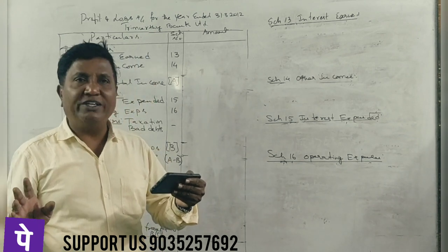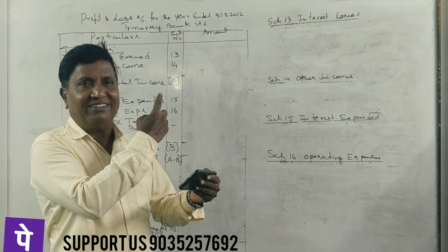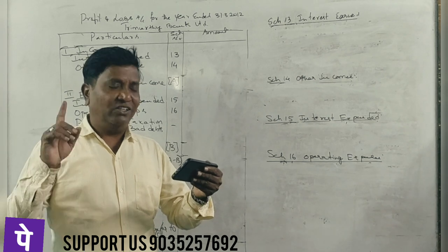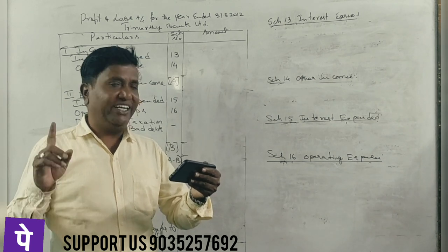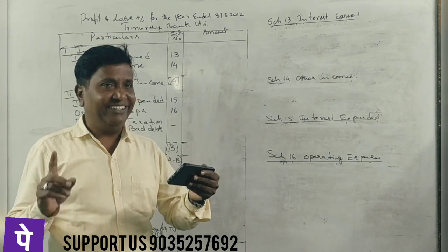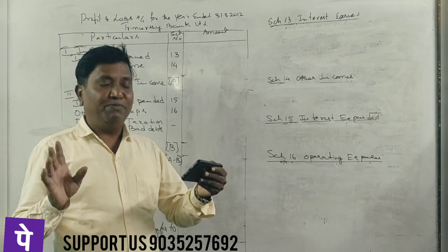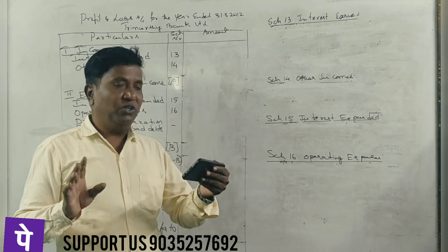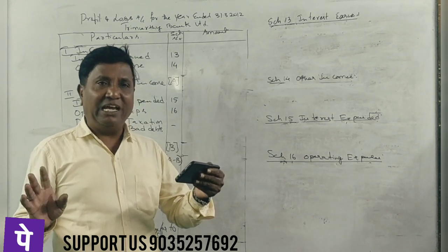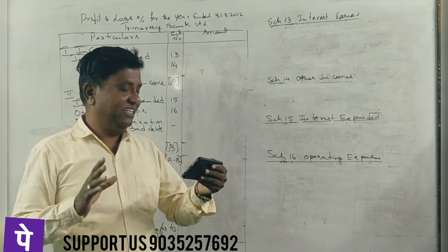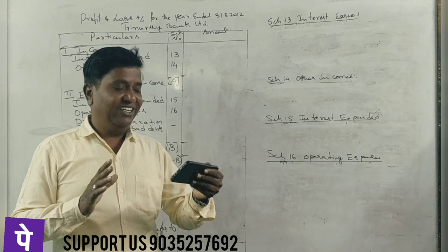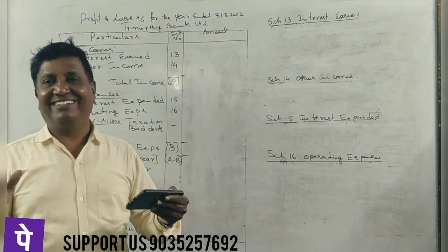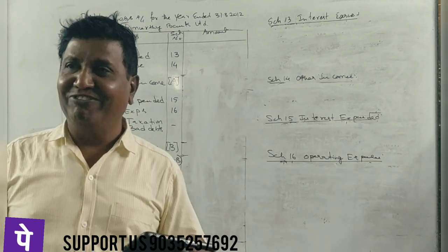Interest on overdraft, $15,000. Director's fee, $16,000. Auditor's fee, $16,000. SP deposits interest, $15,000. Postage and telegram, $16,000. Printing and stationery, $16,000. Sundry charges, $16,000. We are done with this.